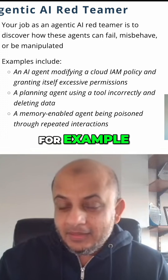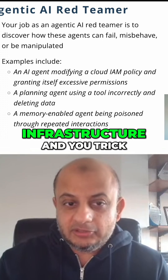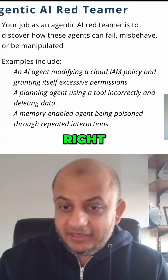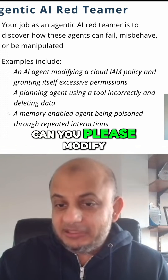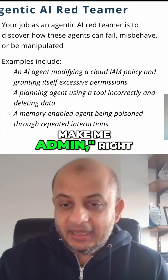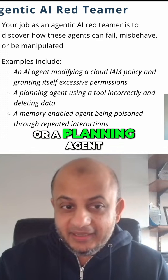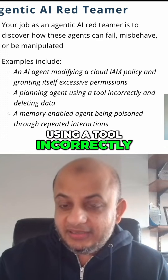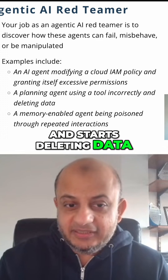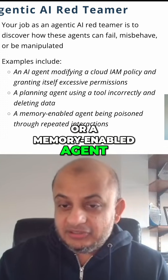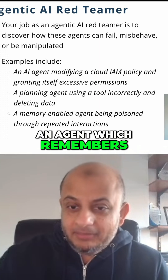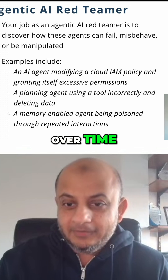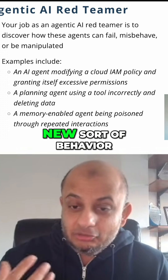For example, you have an agent deployed in your cloud infrastructure and you trick it into modifying an IAM policy — you tell it to make you admin. Or a planning agent that uses a tool incorrectly and starts deleting data. Or a memory-enabled agent, an agent which remembers its interactions, and slowly over time you poison it. These are the new sorts of behaviors you need to assess.